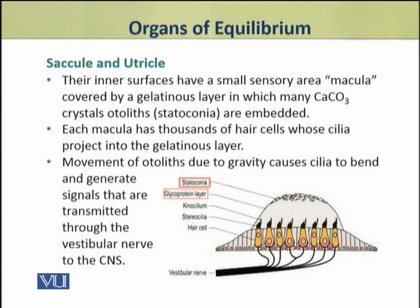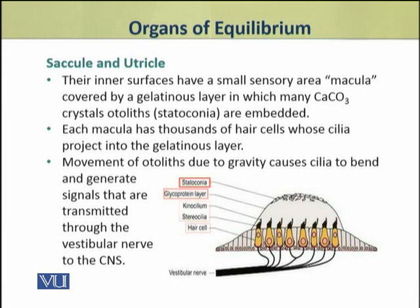This macula has thousands of hair cells. These hair cells have cilia which project into the gelatinous layer. Otoliths or statoconia move in response to gravity. As a result, signals are generated which are transmitted through the vestibular nerve to the central nervous system.